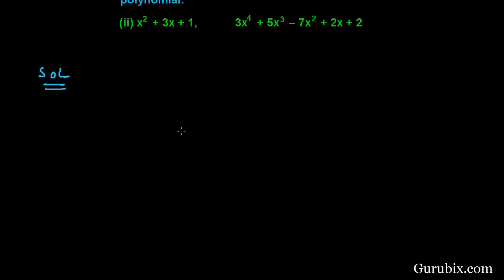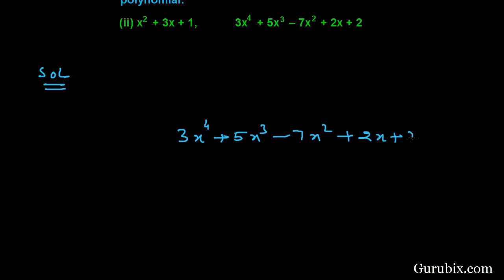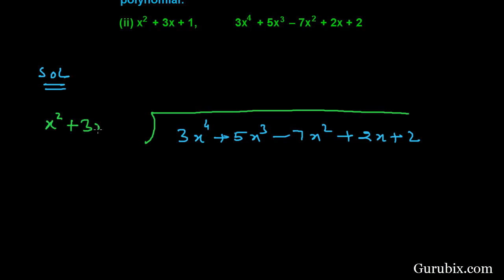First of all, we shall write the second polynomial here: 3x to the 4th power plus 5x cubed minus 7x squared plus 2x plus 2. And here is the divisor: x squared plus 3x plus 1.